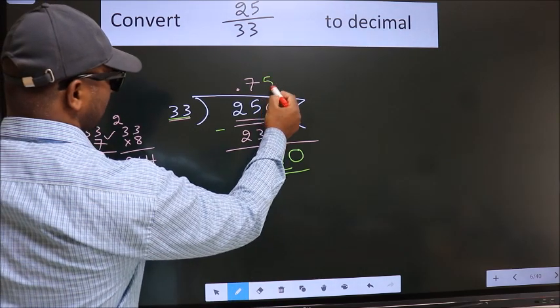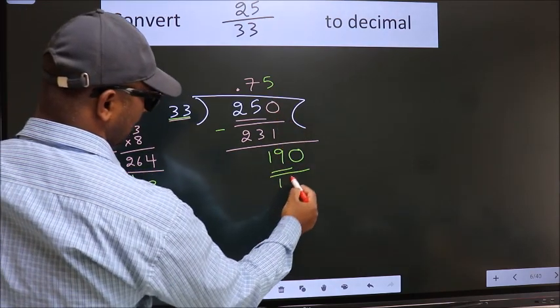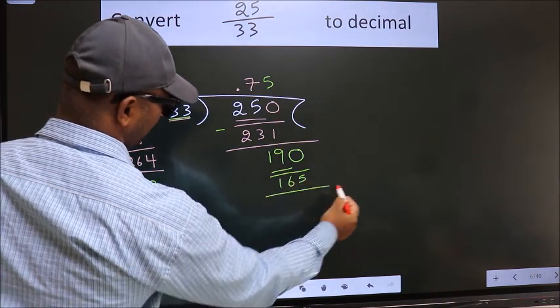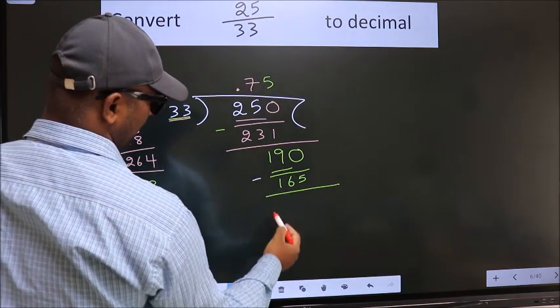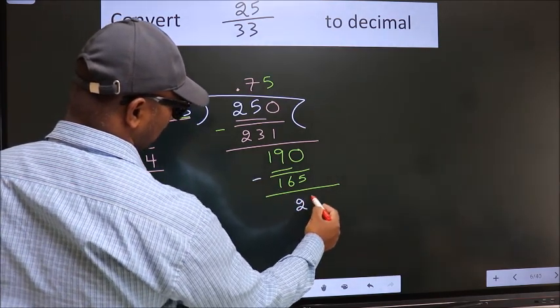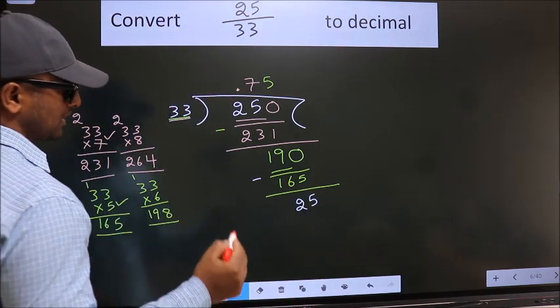So 5 times 33 is 165. Now we subtract and get 25. Now here you observe.